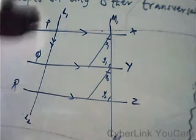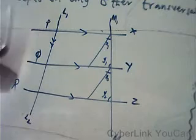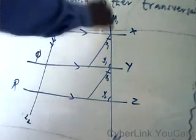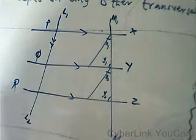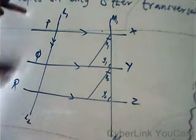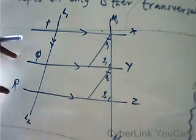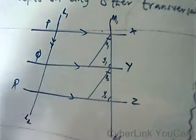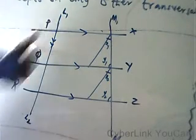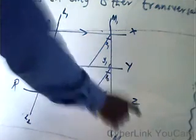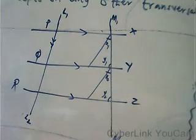We now want to prove that if it happens on this side, then on the other transversal line on the other side, the same will hold. In other words, if PQ equals QR, then similarity will still happen at the other end — meaning XY equals YZ. That is what we want to prove.